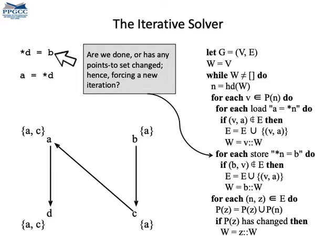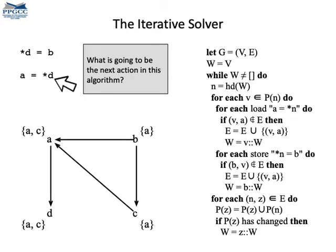At this point, can you try it? Do you know what will happen once we evaluate the instruction star d equals b? Well, we have that d now contains a and c. So, we already have an edge from b to c, but no edge from b to a. In this case, we create this edge. And this time, new information is not created. Basically, a was already within the points-to-set of a itself. And that's pretty much it. Nothing changes once we evaluate the load. And we are done. The graph has stabilized.